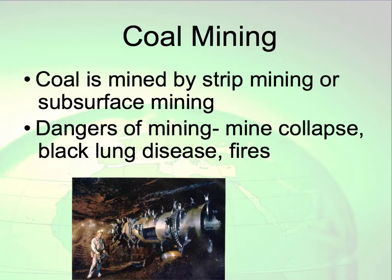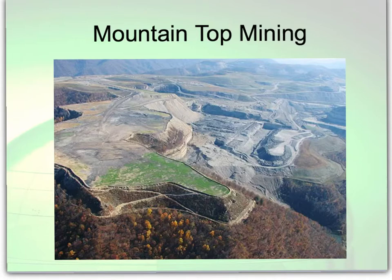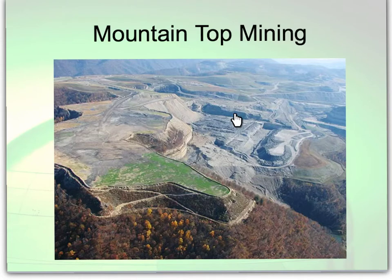We get coal by mining for it, either by strip mining or subsurface mining. There have been mine collapses, black lung disease, and fires — coal mining is a very dangerous thing to do. Another way we get coal is mountaintop mining. What you see here actually used to be a mountaintop; they use dynamite and blow it off for easy access to the coal, saving money and making the coal easier to access. However, it causes really bad effects on the surrounding environment.